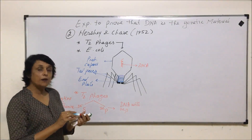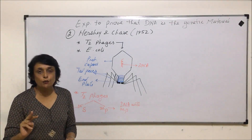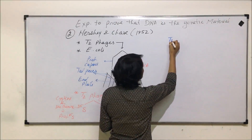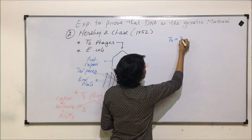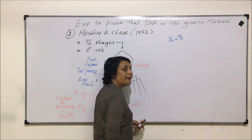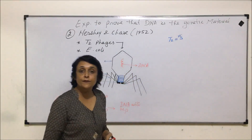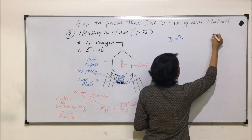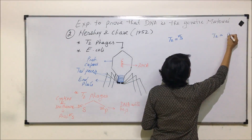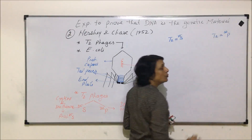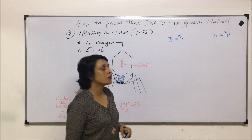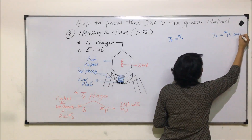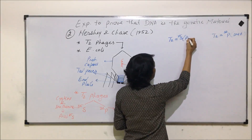So now there were two types of bacteriophages: one T2 phage with sulfur S35, where the sulfur was a part of the protein; and another T2 phage with phosphorus P32, where the phosphorus was a part of the DNA.